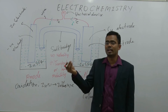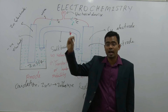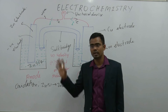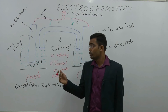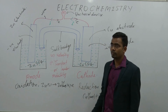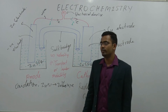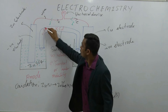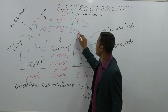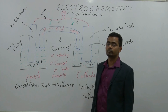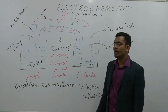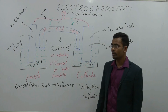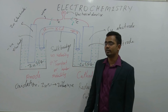Transport number does not depend on charge; it depends on the ion. The fraction of total current carried by any ion is called its transport number. Generally, KCl is used: Cl- flows in one direction and K+ flows in the other direction. Sometimes KNO3 and ammonium nitrate are also used.